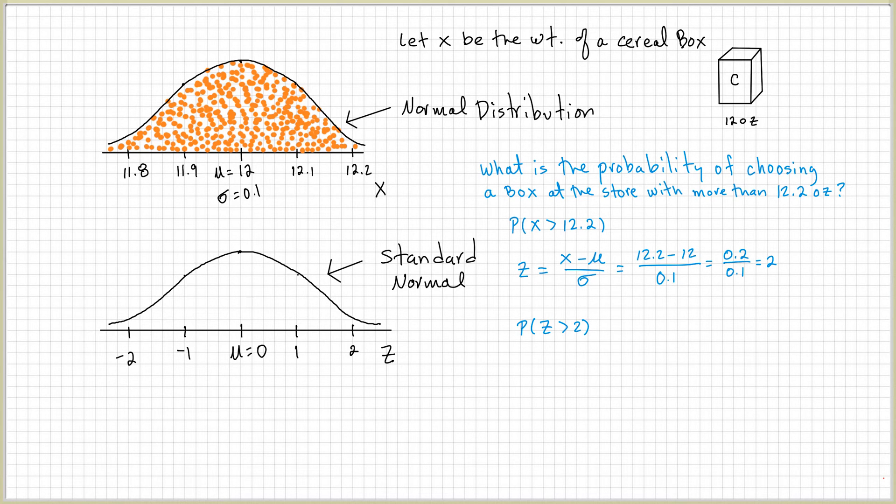Now, you might think, how does that happen? Well, if you think about it this way, probability of x is greater than 12.2, you can think of it as the probability of x minus mu over sigma is greater than 12.2 minus mu over sigma. We haven't done anything. We just subtracted and divided.